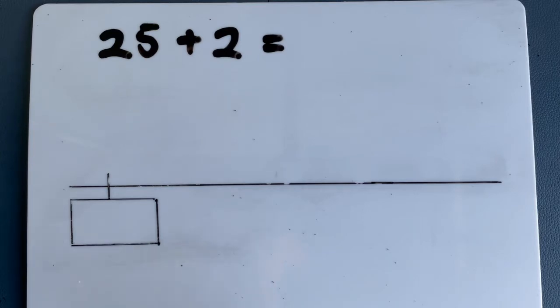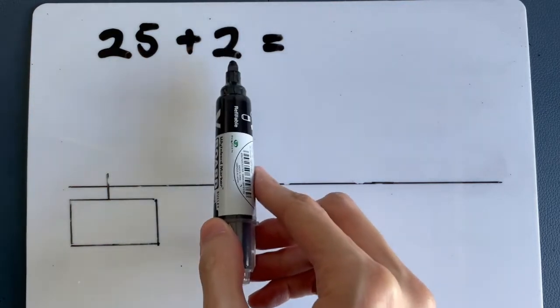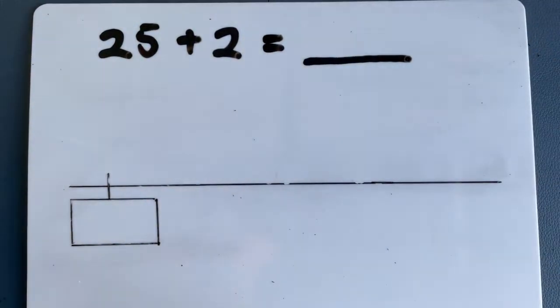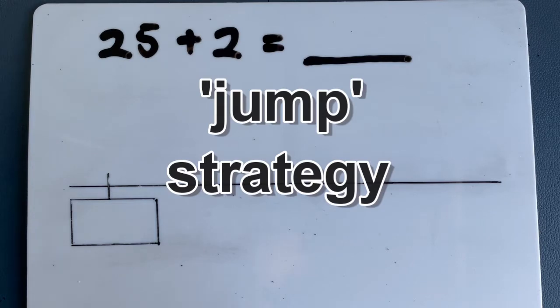So let's do our first example, 25 plus 2 equals what? We have to find the answer to this question. I have here with me a number line, and I will show you how to use it. We are going to use the jump strategy to solve this problem.